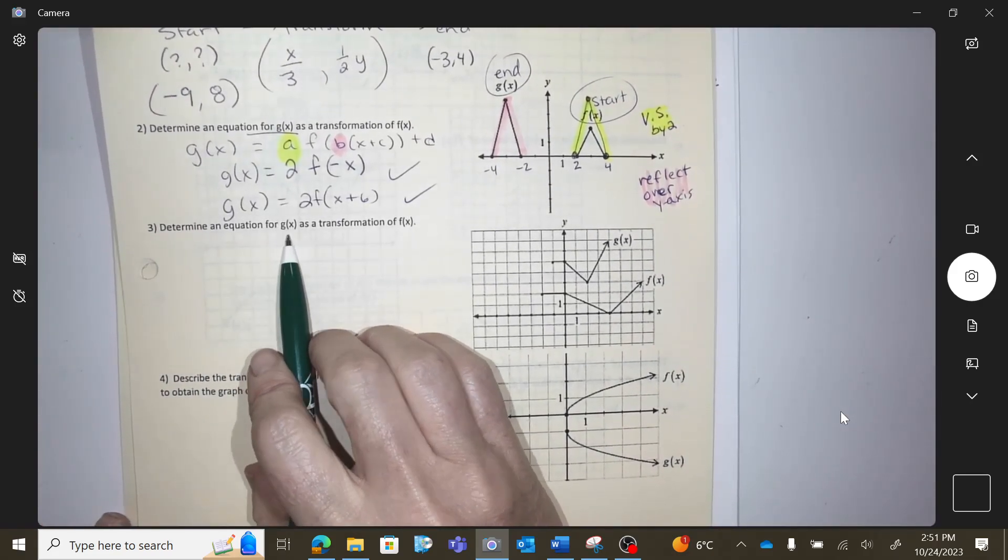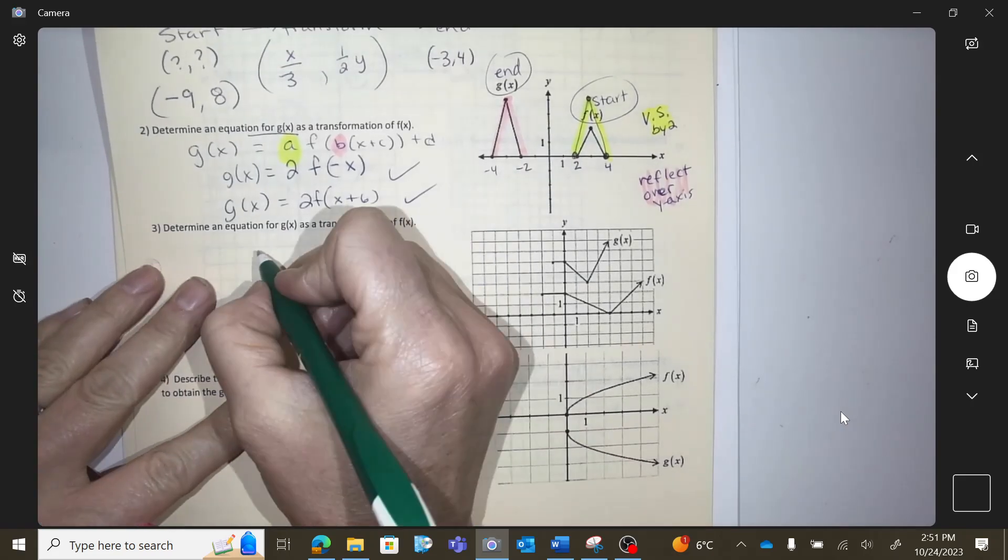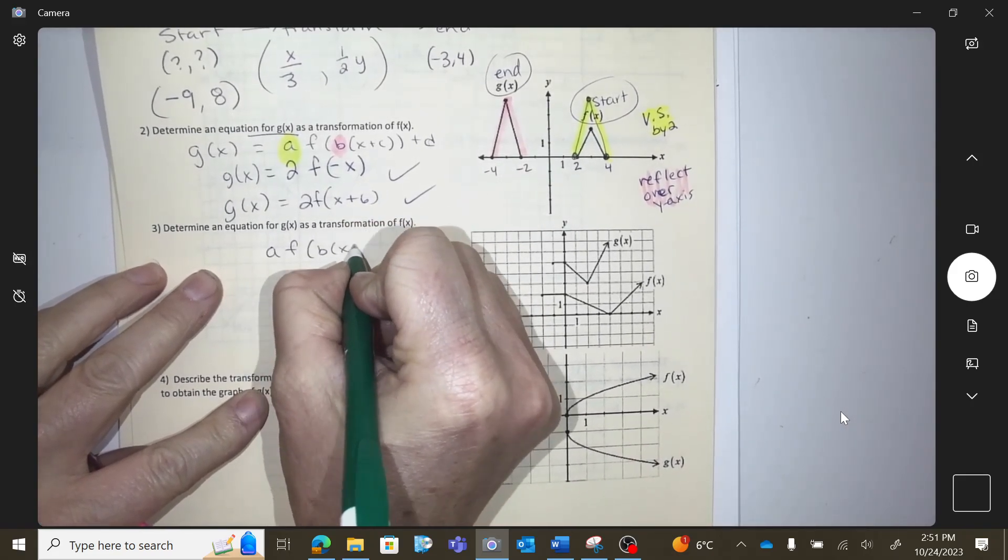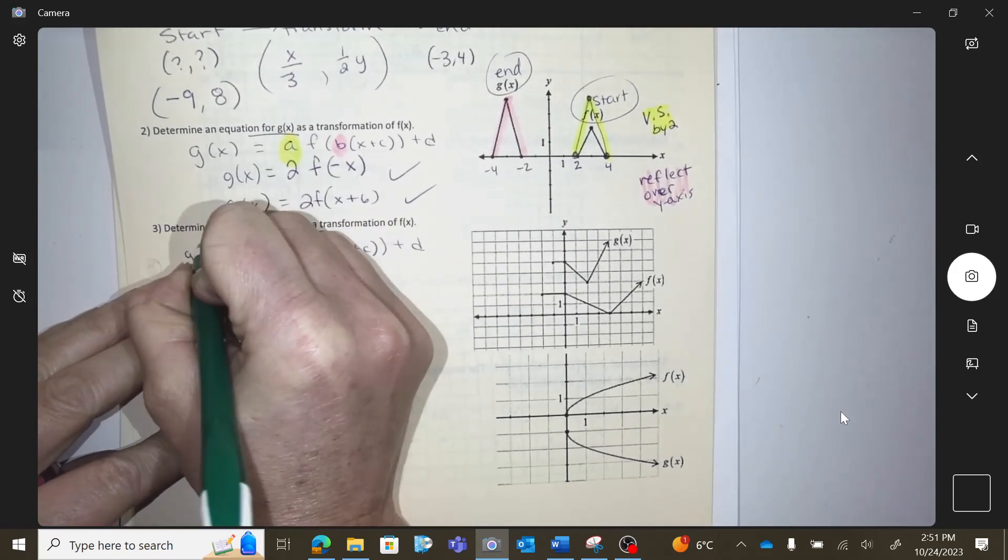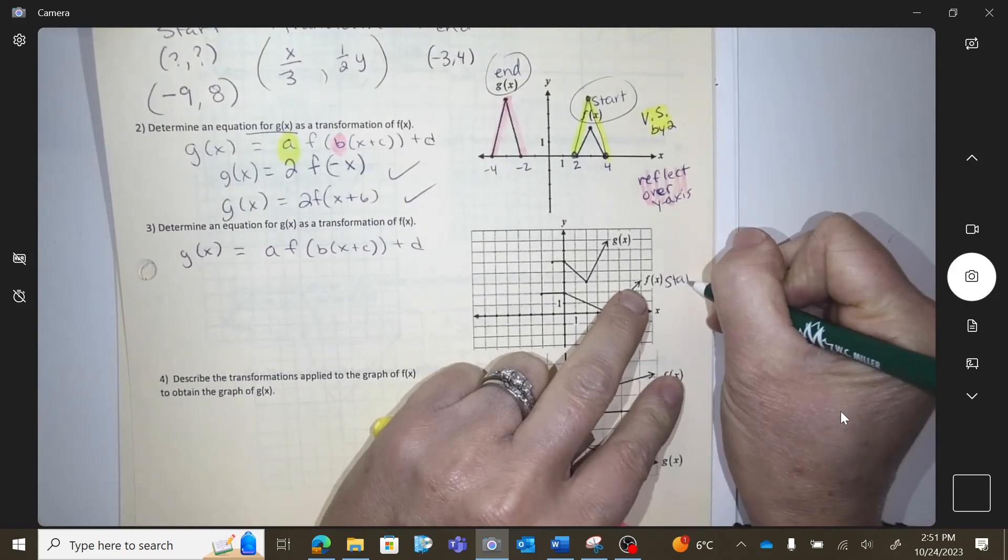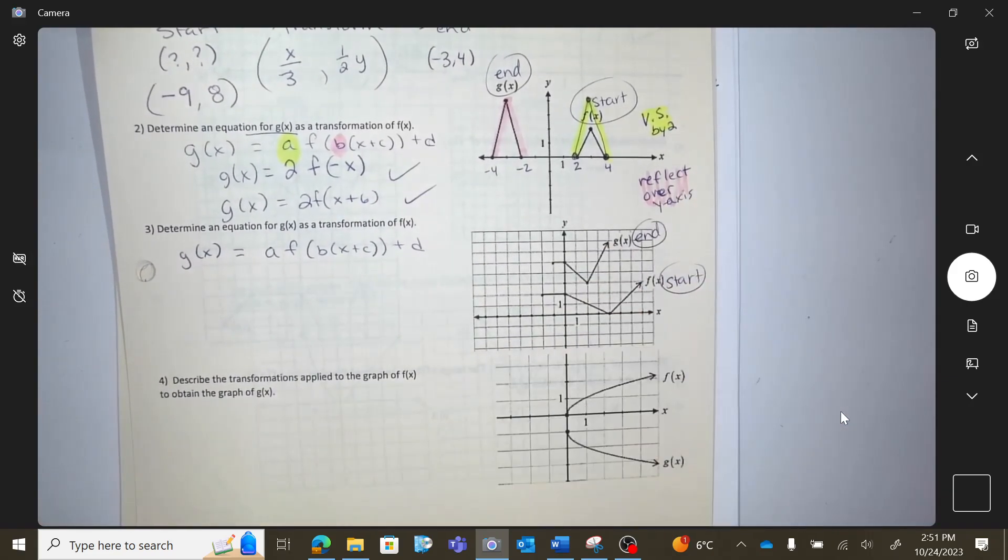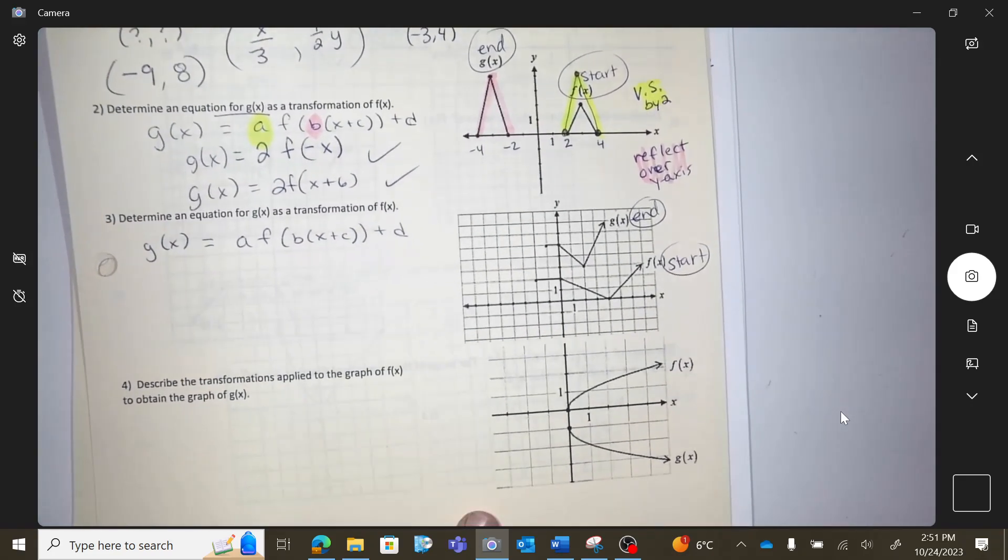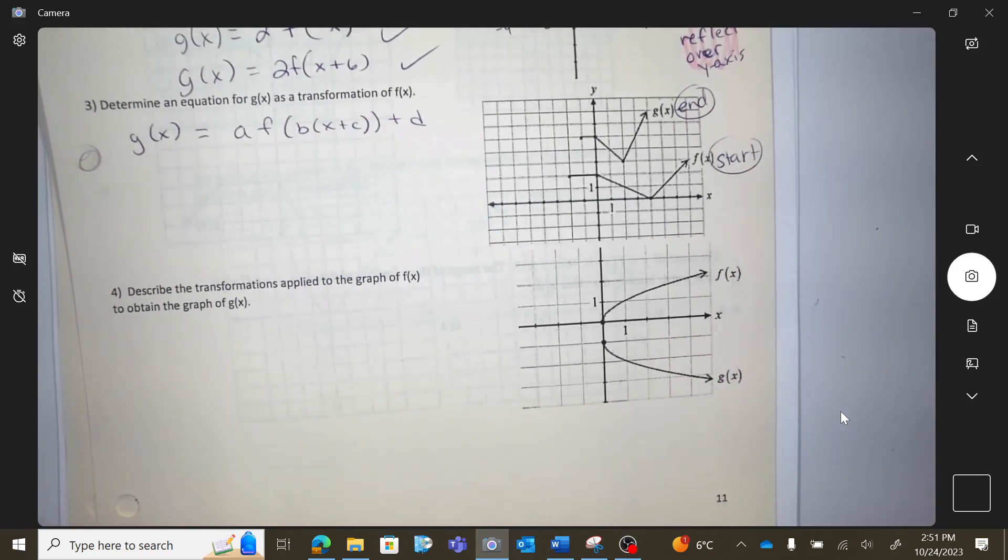Should we do one more and then I'm going to let you go? Determine the equation for G as a transformation of the F. So we have to transform the F to get to the G. So start with F and end with G. You have to start at F and get to G. First question, from F to G, do you see me doing any stretches, compressions, reflections?